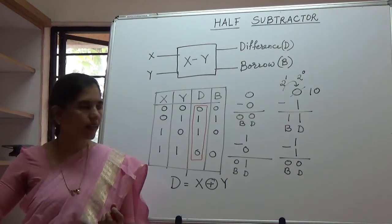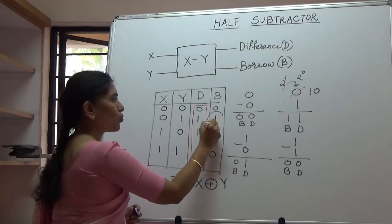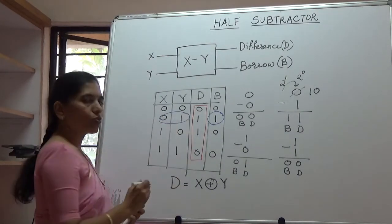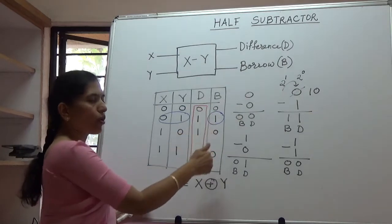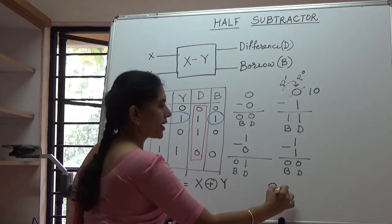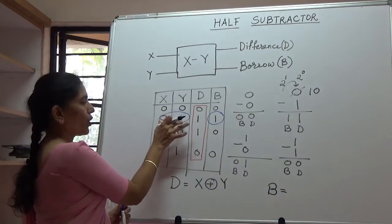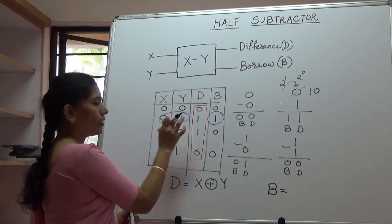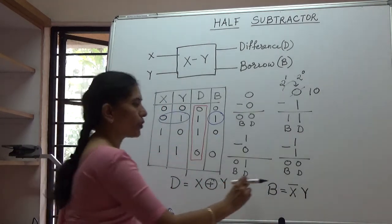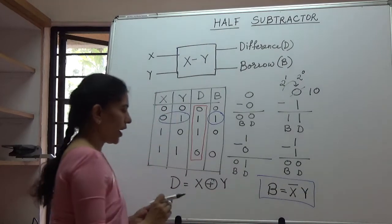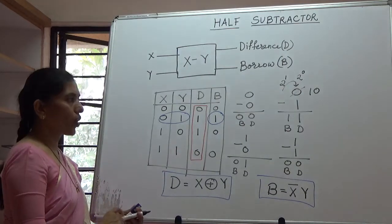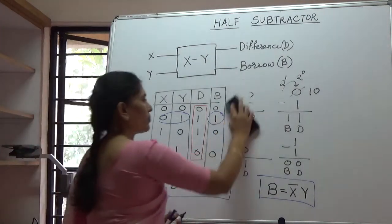Now if we look at the borrowed bit, it is 1 for only one combination and that is when X is 0 and Y is 1. For all the other combinations, the borrowed bit is 0. Therefore, the borrowed equation can be written as corresponding to this particular term of X0 and Y1, the borrow is written as X bar Y. So these are the two expressions for the borrow and for the difference which can be implemented using the gates to obtain the combinational circuit for the half subtractor.